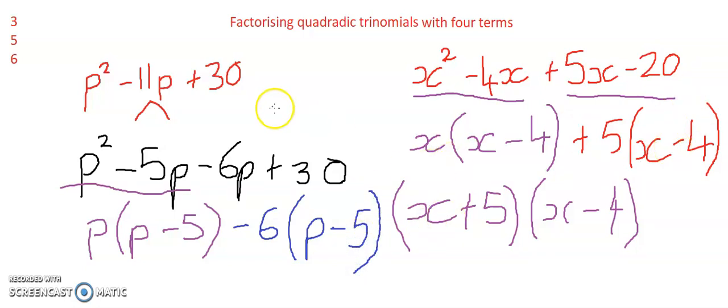Straight away I can see that I have something that is common which means I can rewrite my question as p take away 6 in brackets and p take away 5 in brackets. And that is how we factorize a quadratic trinomial with 4 terms.